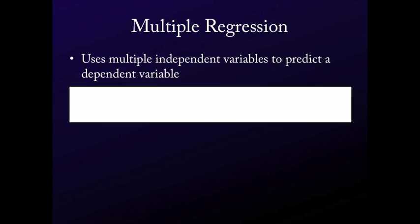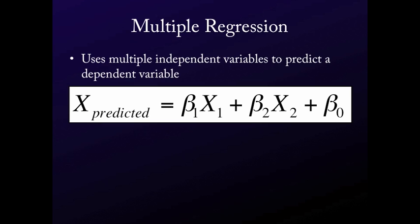So multiple regression is used when you have multiple independent variables predicting a dependent variable. And again, the equation looks exactly the same. You just basically have extra variables in there. So if you look at it, x predicted is now our beta coefficient for our first variable, x1, plus our beta coefficient for our second variable, x2, plus our intercept.